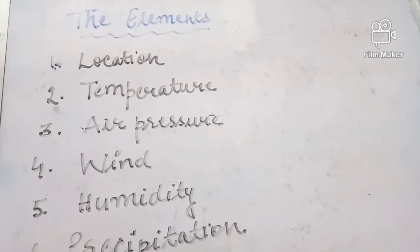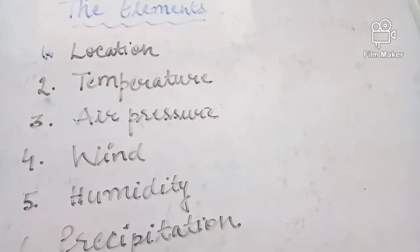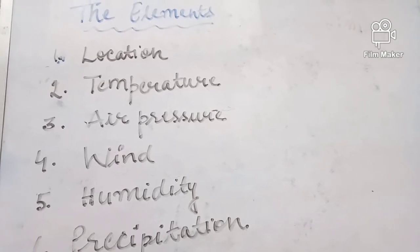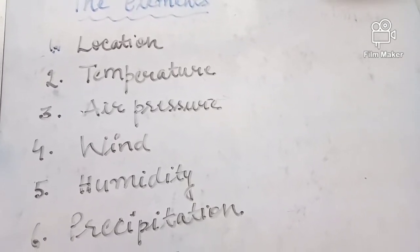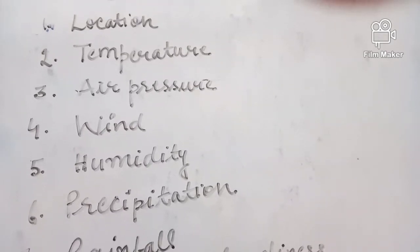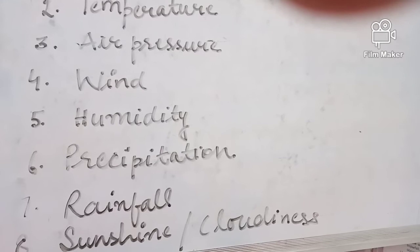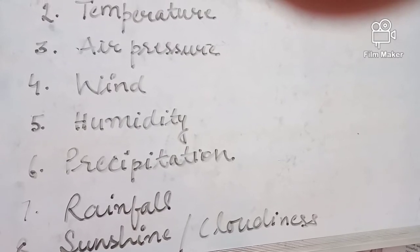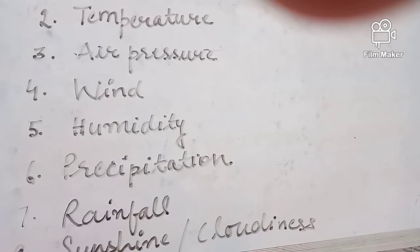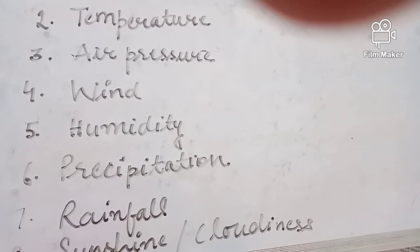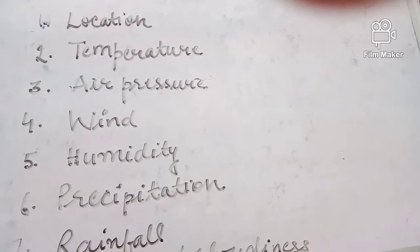Weather and climate have some basic elements: location, temperature, air pressure, wind, humidity, precipitation, rainfall, and sunshine or cloudiness. The difference between weather and climate lies in the degree and duration of these elements.